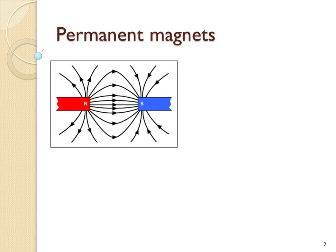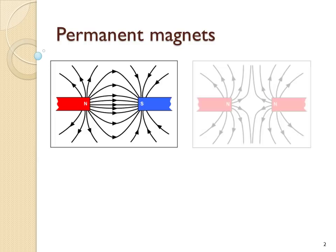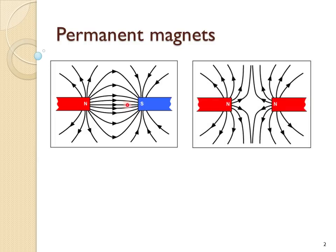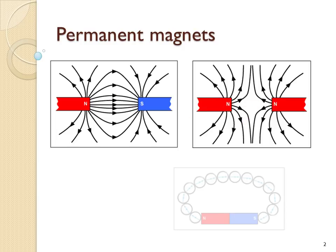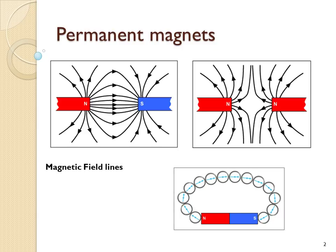Permanent magnets have two poles: a north pole and a south pole. When you place two opposite poles next to each other, the magnets attract, and when you place two similar poles next to each other, they repel. The lines you see drawn are magnetic field lines — lines which point in the direction that a compass would point if placed at that particular point. For example, a compass placed here would point up towards the south pole. Here you can see compasses placed end to end, and you can see that they follow a field line.